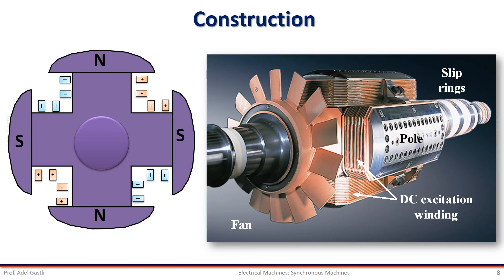This figure shows an example of a four salient pole rotor with DC excitation winding and slip rings. The fan is used for cooling purposes. The field winding terminals are usually connected to slip rings, on which brushes are placed in order to inject DC current into the field winding. However, some other designs do not use the brush-slip ring assemblies to avoid sparks and maintenance. These are called brushless machines.